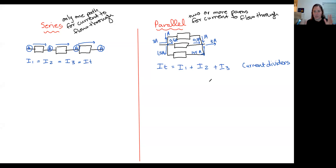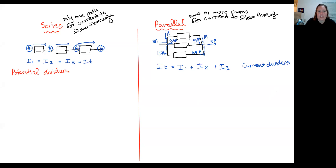When we talk about parallel circuits, we say that they are current dividers. When it comes to series, we talk about series circuits as being potential dividers — they divide the potential. The idea is that if I looked at the voltage across all three series components, it would be the sum of the voltages across each of the individual components.